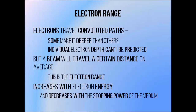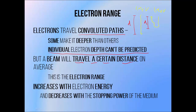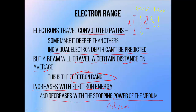Electrons tend to travel a fairly tortuous path through matter. Electrons with the same energy will normally travel the same distance through matter, but some will travel further in a straight line than others. We can't predict much about individual particles, but when we look at large numbers of them as we find in radiation beams, we can make very accurate predictions as to what the population will do as a whole. Beams will tend to travel a certain distance through matter on average — this is the electron range. It's not the maximum distance that an electron can travel in a straight line; it's the average distance that electrons in the beam travel. The electron range increases with electron energy, and decreases with the stopping power of the medium.